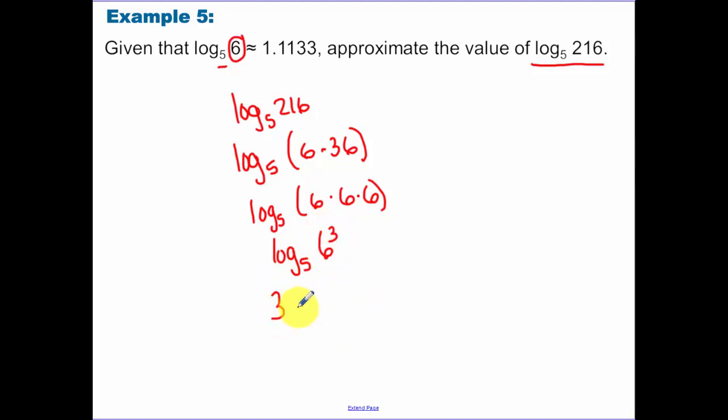So I have log base 5 of 6 to the 3rd. Bring the 3 down in front times by the log base 5 of 6, so we have 3 times 1.1133 and that ends up equaling 3.3399. And you guys can't do these if I don't give you that value first, so keep that in mind.